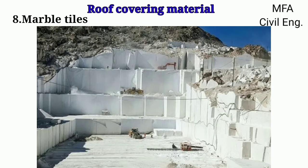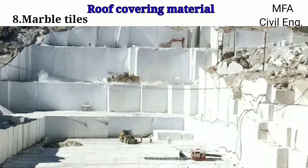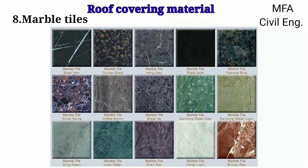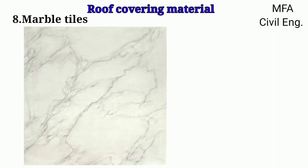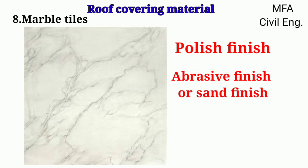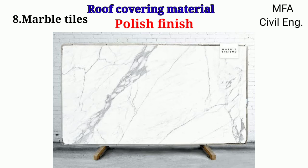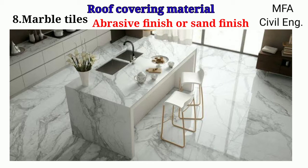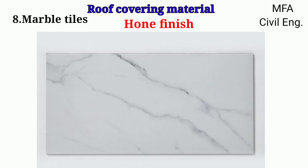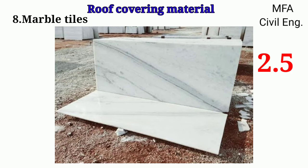Marble tiles are from naturally occurring stones and are available in large scale in the Rajasthan region. Marbles are available in two types: white marbles and color marbles. The glazing and beauty of marble tiles can be increased by performing various finishes like polished finish, abrasive finish, sand finish and hone finish. Polished finish gives a high polished glossy surface. Abrasive or sand finish gives a flat non-reflective finish, and hone finish gives a velvet finish with little or no gloss. The specific gravity of marble stones is about 2.5 and moisture absorption is less than 4% after 24 hours.